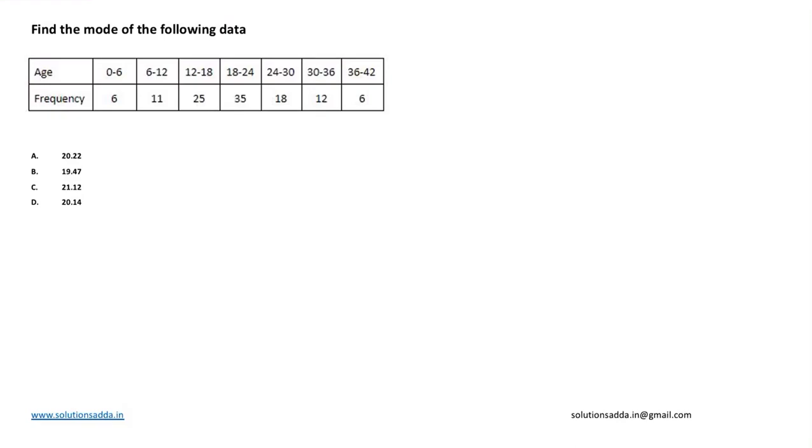This is a question from engineering mathematics. Here we need to find the mode of the following data where we have been given the age ranges and the frequency of each age range. Options are 20.2, 19.47, 21.12, and 20.14.